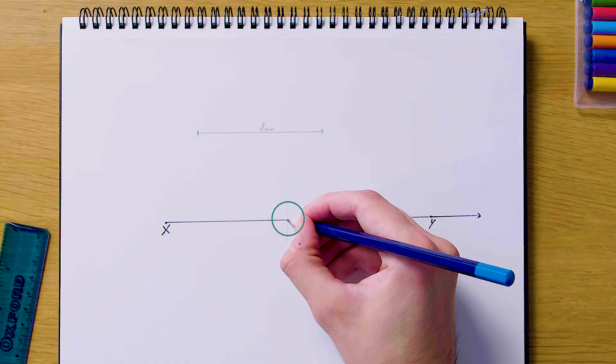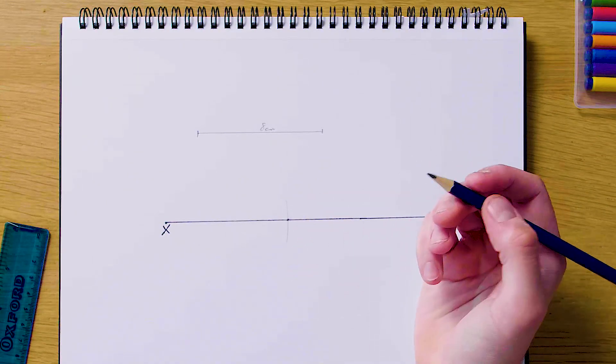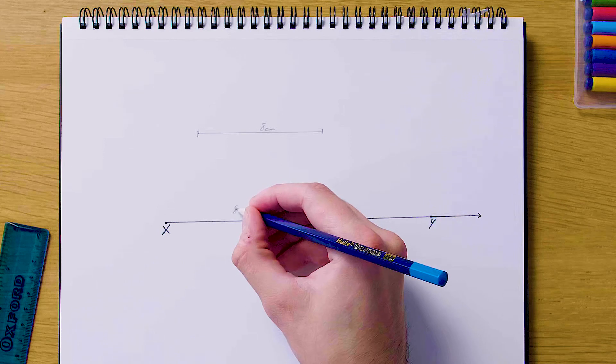So just mark across from x as a point of intersection. That is 8 centimeters away from x, which means we have completed the construction.